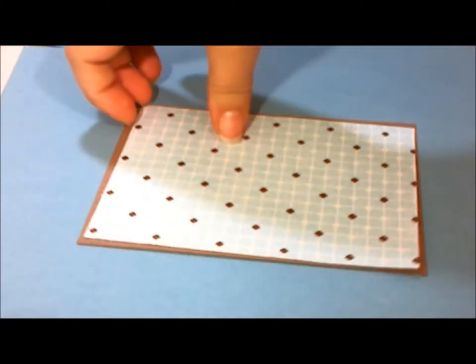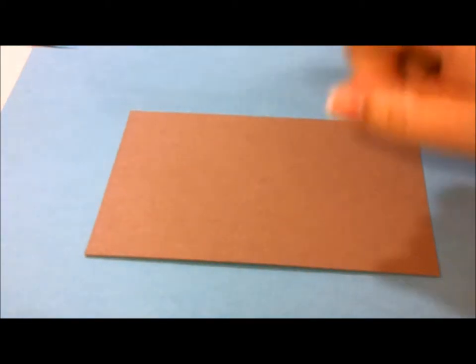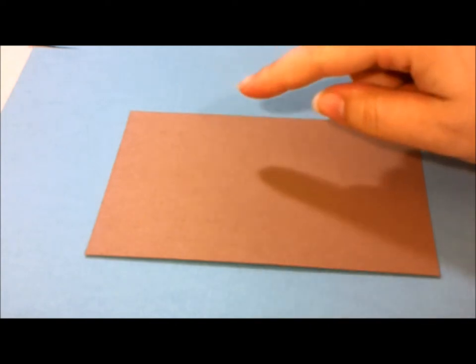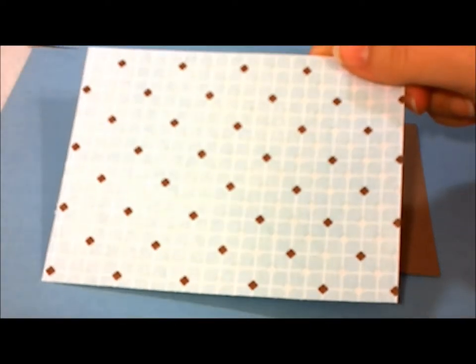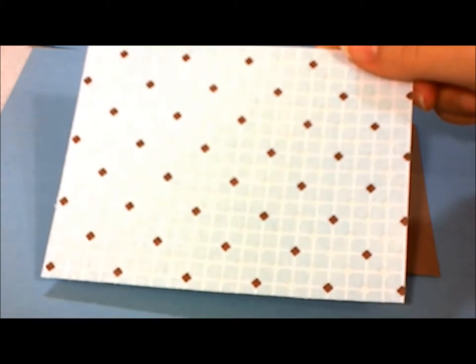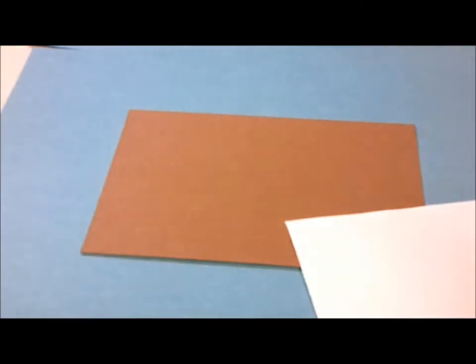So our base of our card is four and a quarter by five and a half. Our mat of our card is five and a quarter by four inches, and we're going to glue that on.